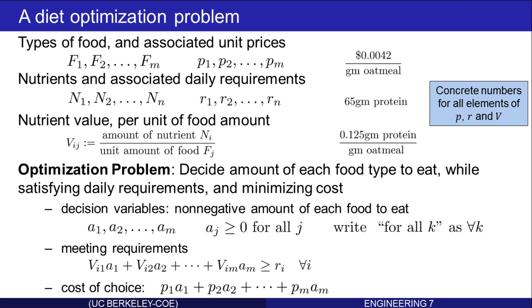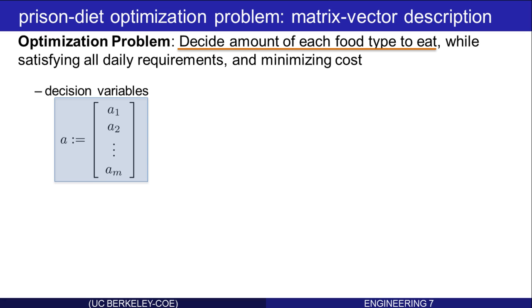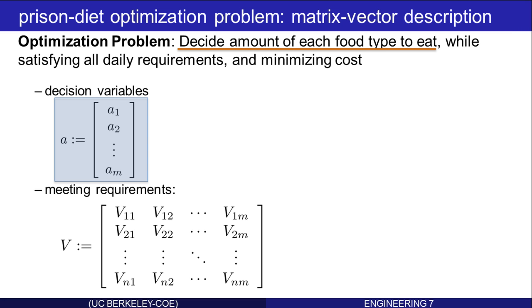Let's express it with some matrices and vectors. Let's write the decision variables as a vector, A1, A2, up through AM. These are called decision variables because we decide the amount of each food type to eat. Next, we need to meet the requirements. That can be expressed involving matrices and vectors and an inequality. Let V be the array, arranged like this, of the amount of nutrients per unit amount of food.